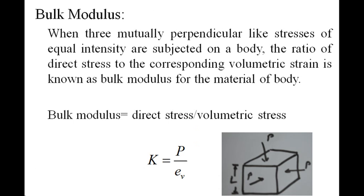The fourth type of elastic constant is bulk modulus. If we consider any three-dimensional body subjected to three mutually perpendicular stresses of equal intensity, the ratio of direct stress to the corresponding volumetric strain is defined as the bulk modulus K for that material. If we denote direct stress by P and volumetric strain by EV, then the bulk modulus K is equivalent to P divided by EV. Thank you.